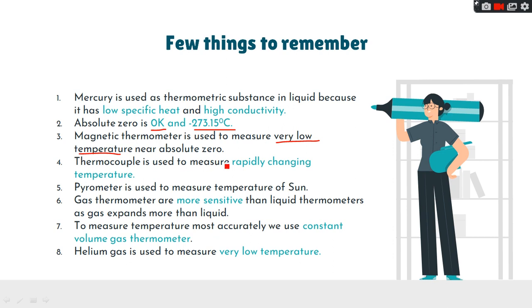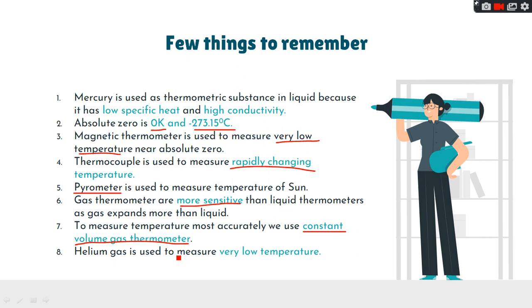Thermocouple is used to measure rapidly changing temperature. Pyrometer, by name, is used to measure high temperature — it is used to measure the temperature of the Sun. Gas thermometers are more sensitive than liquid thermometers as gas expands more than liquid. To measure temperature most accurately, we use a constant volume gas thermometer.